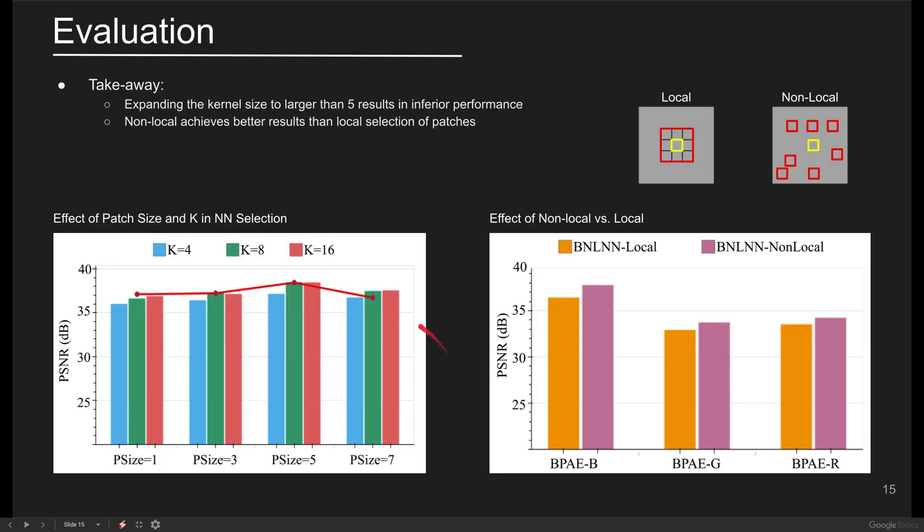In this slide, we examine the impact of kernel size and the number of selected similar patches on the denoising performance. The color bars for different patch sizes in the figure on the left show that the denoising performance improves as we increase the number of retrieved similar patches from 4 to 8.